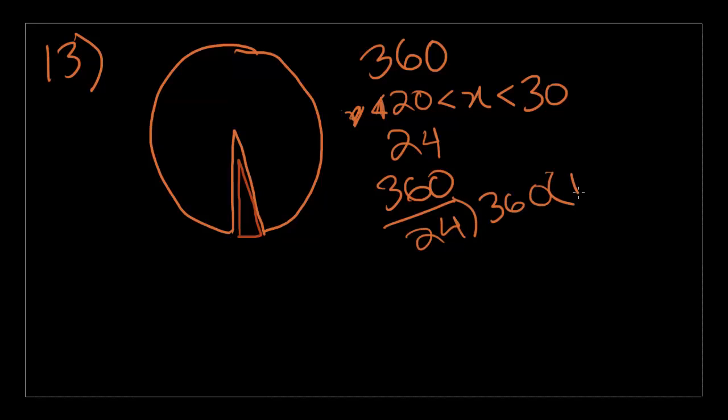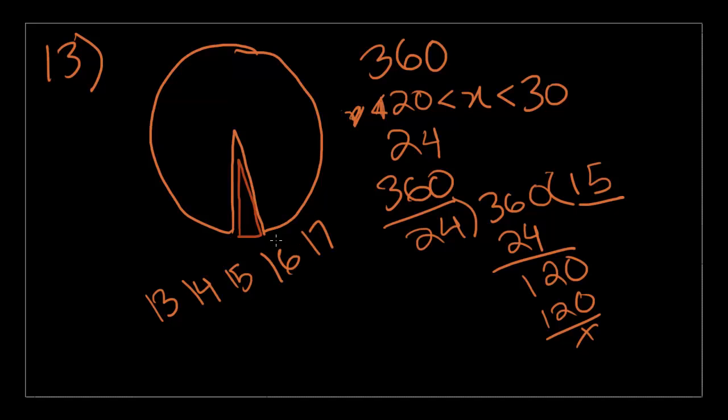360 divided by 24 shall be 15. And, I just needed to do the math. 15 slices, that's a possible answer. Now, you can use any angle between 20 and 30, just excluding those. You can end up with maybe 13 slices, or 14, or 15, which I just said, or 16, or even 17.